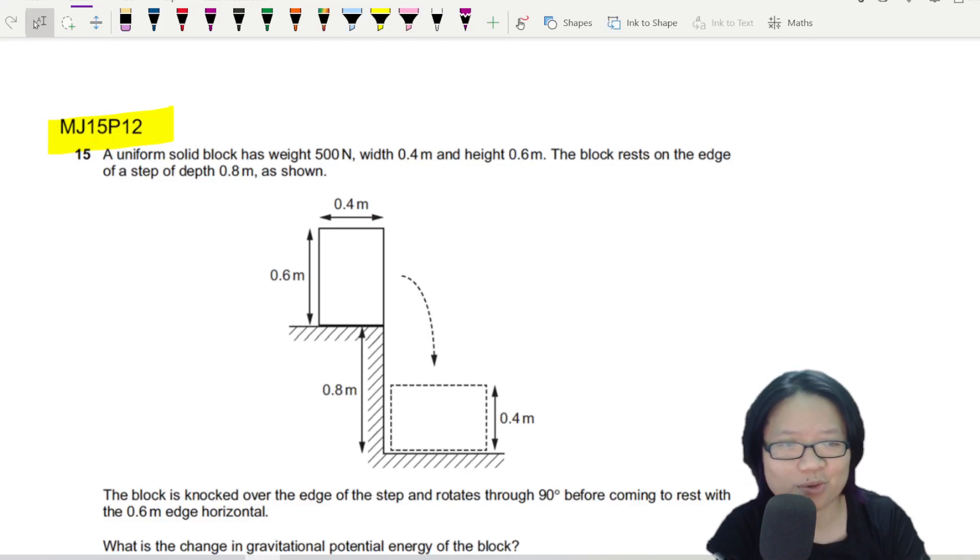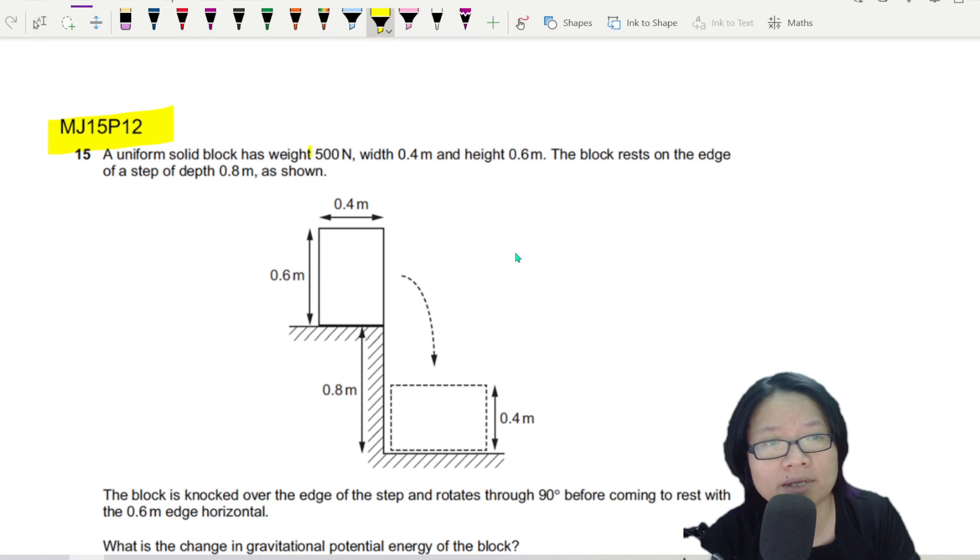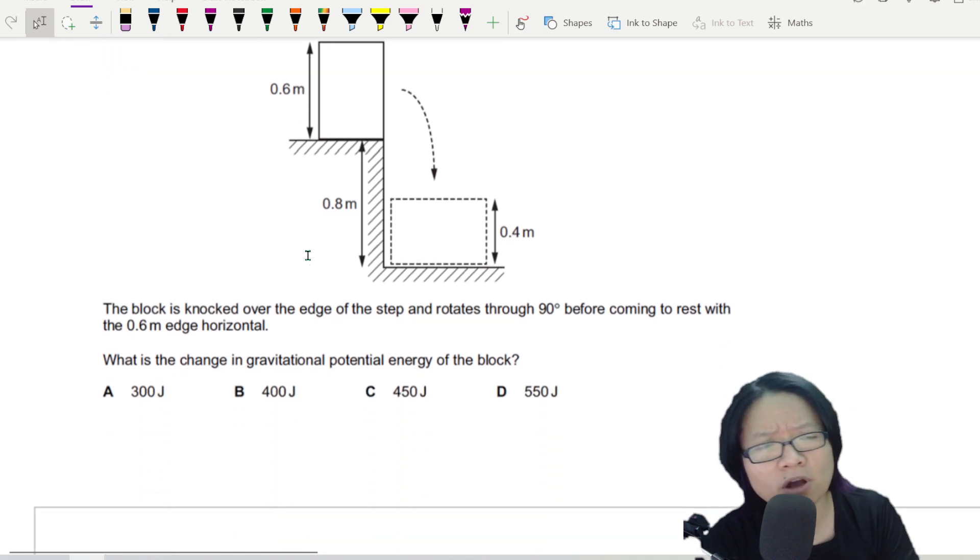In this video we are going to look at a solid block toppling down like Humpty Dumpty. We have this uniform solid block - you are given the weight of the block, let me highlight this, and the width of 0.4 meter, height 0.6 meter, and the block rests on the edge of a step like this.